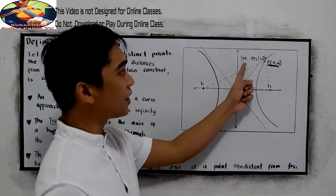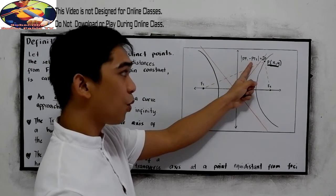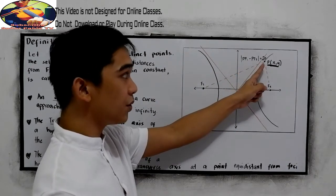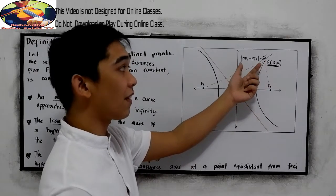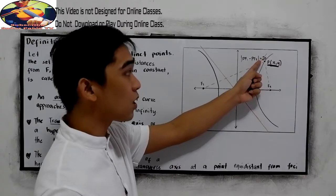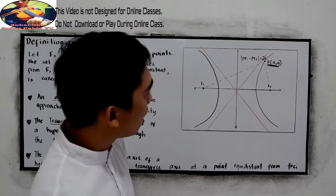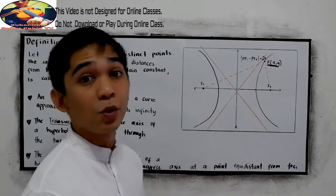So their distance may differ through a certain point. And we have here the distance from P to f sub 1 minus the distance from P to f sub 2, taking the absolute value to get the positive value, equals 2a. So this is the graph of the hyperbola.